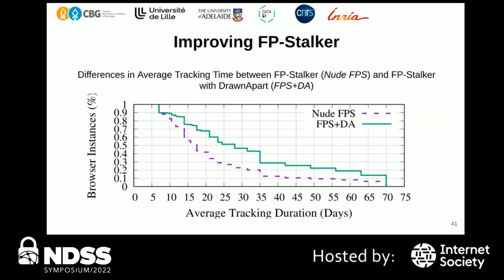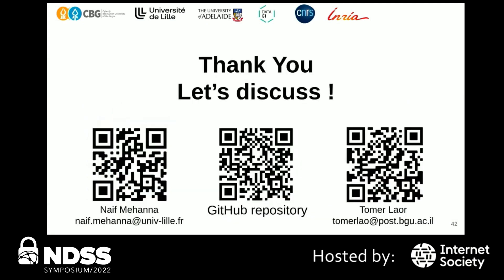The improvement we achieved on FPStalker is significant. We improved the average tracking duration by over 66% — from approximately 17.5 days to around 27 days. This is a great improvement to the state of the art. Thank you for listening to our presentation; we're ready to discuss.